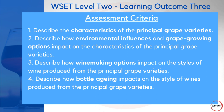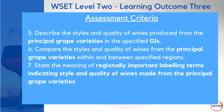Those assessment criteria include: describing the characteristics of the principal grape varieties; describing how environmental influences and grape growing options impact those grapes; describing how winemaking options impact the various styles of wine; describing how bottle aging impacts the grape varieties; describing the grape varieties from their specific geographical indicators; comparing styles and qualities from various regions globally; and stating regionally important labeling terms indicating style or quality. We'll tackle each criteria one by one with example questions.